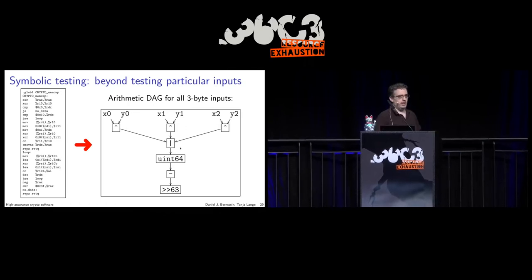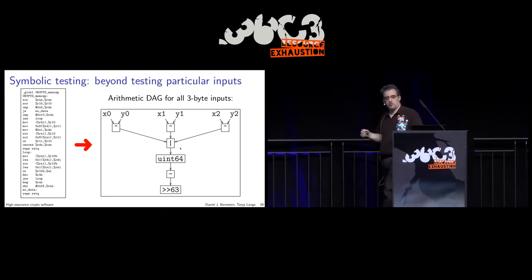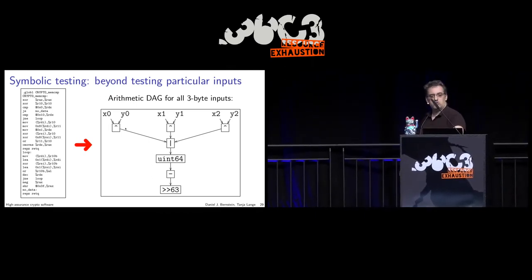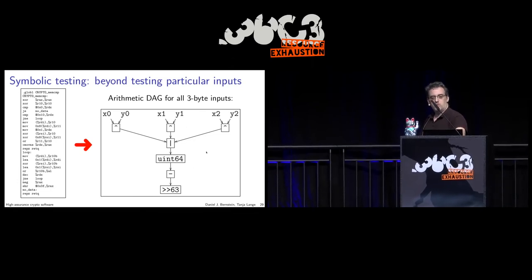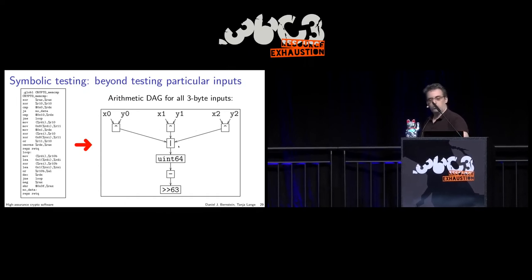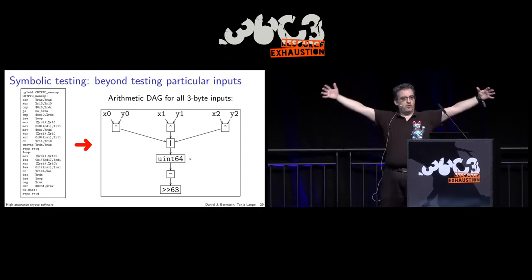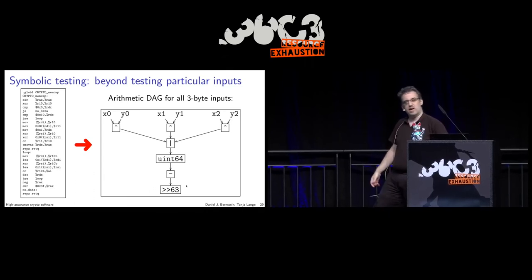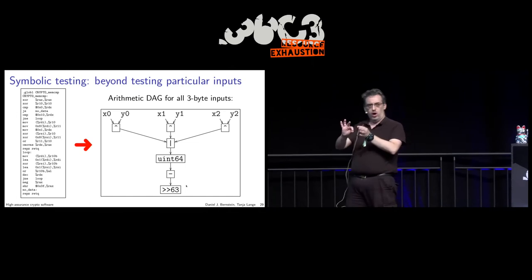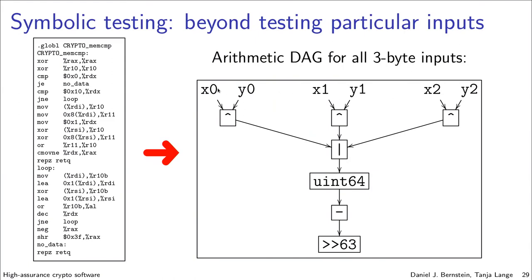We have three-byte XOR — exclusive OR. We OR them all together. If everything is zero, the result is zero. If there's any difference in these bytes, we convert to uint64, negate, shift — some logic. You can look at this and say yes, it's correct. You can look at the assembly and look at the graph — the DAG — analyze it and say yes, this code works correctly.